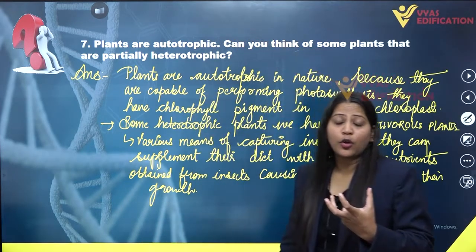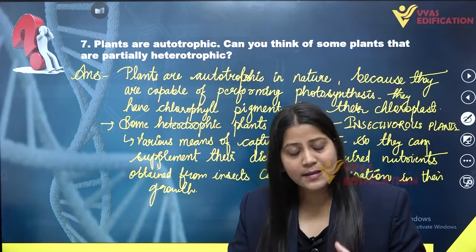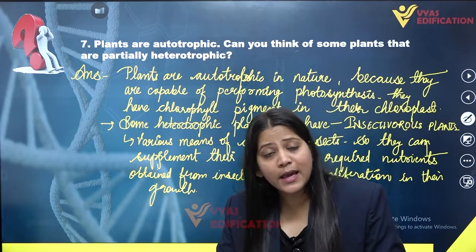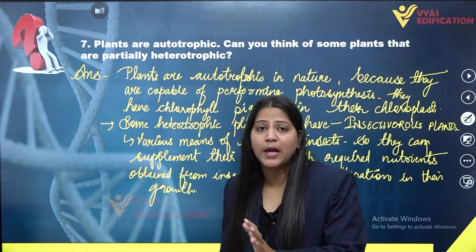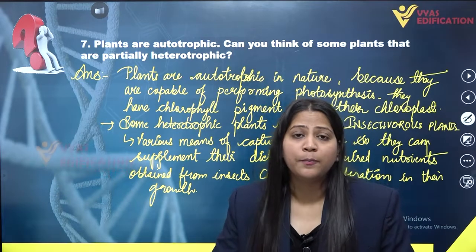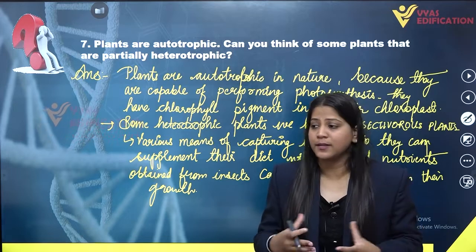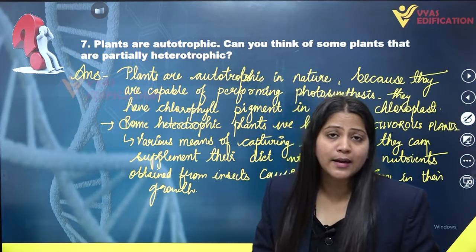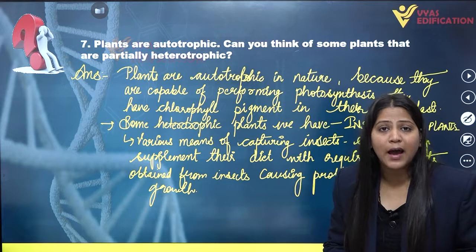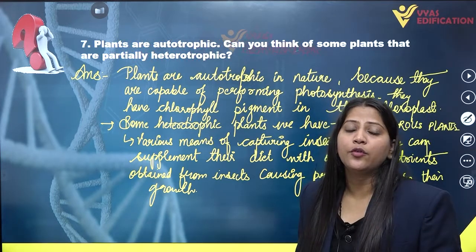So they are partially heterotrophic. Some insectivorous plants are autotrophic, but they are heterotrophic as well. They can switch on to another type of mode of nutrition — that is heterotrophic nutrition — when they are not having an appropriate amount of nutrients. They can eat upon insects to supplement their diet with the required nutrients obtained from insects.